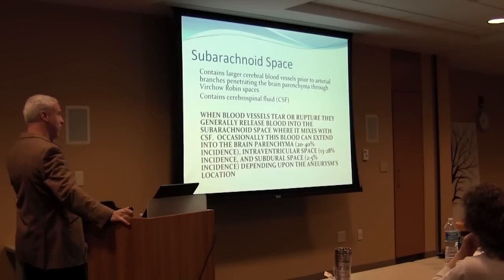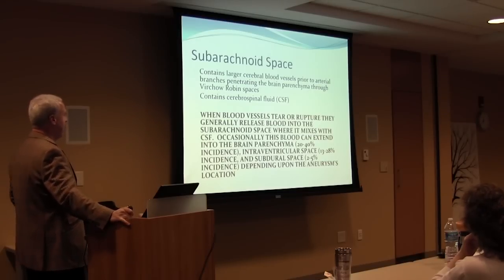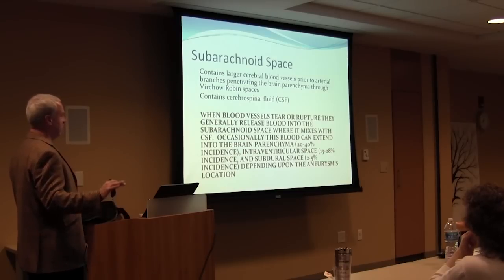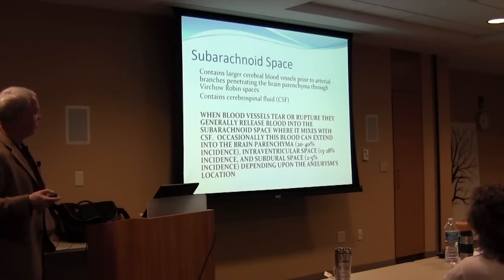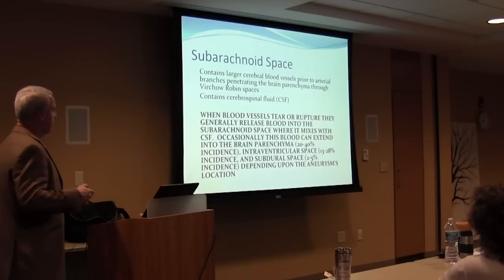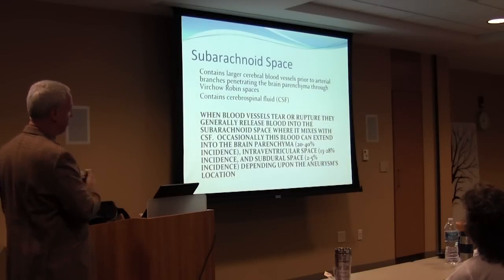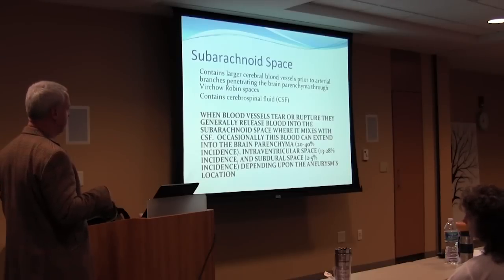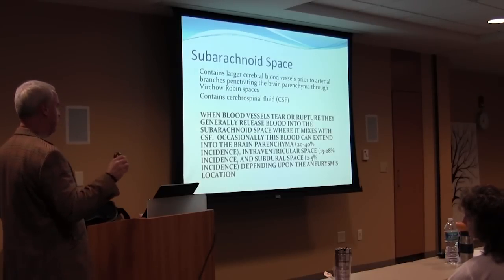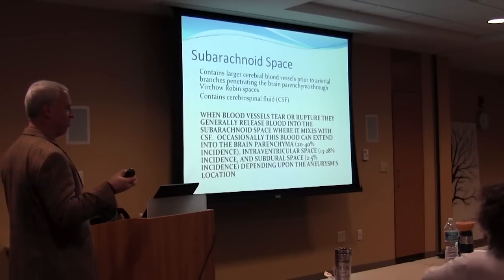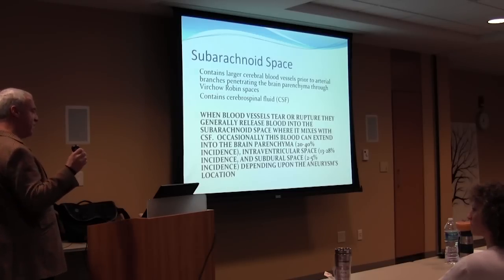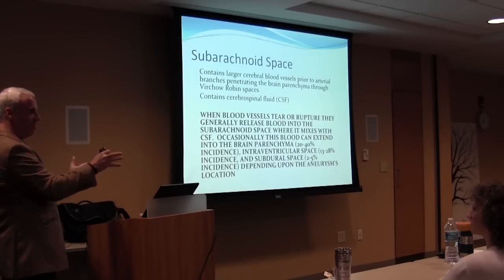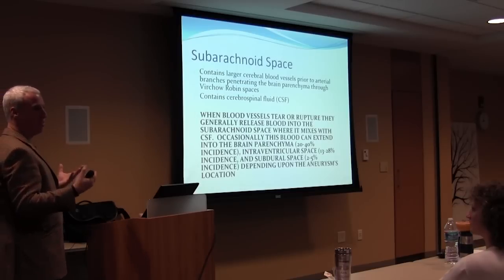The subarachnoid space contains the larger cerebral arteries prior to them branching to penetrate into the brain itself. The areas where they penetrate are called the Virchow-Robin spaces. The subarachnoid space contains cerebrospinal fluid. When blood vessels tear or rupture at an aneurysm, they release blood into the subarachnoid space — that's why it's called subarachnoid hemorrhage. It mixes with the spinal fluid. Occasionally blood can also go into the brain tissue itself, about 20 to 40 percent of the time, because the aneurysms, though not in the brain tissue, are lying on top of the brain.